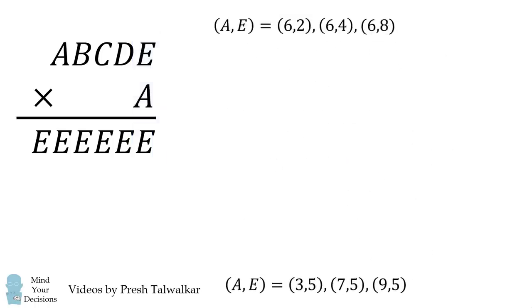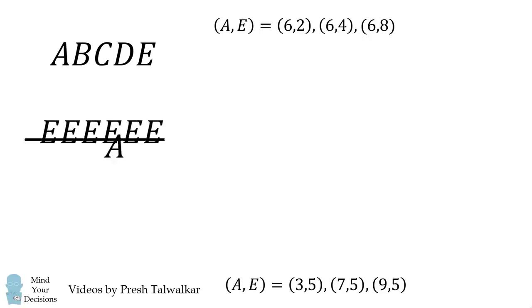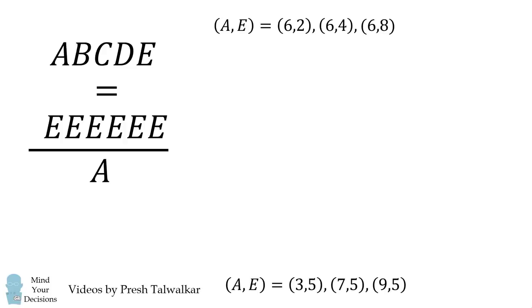First suppose A is equal to 6. Where can we go from here? We're going to convert this multiplication problem into a division problem. Notice that if we have the resulting number divided by A, we'll get ABCDE. So let's work out each case.